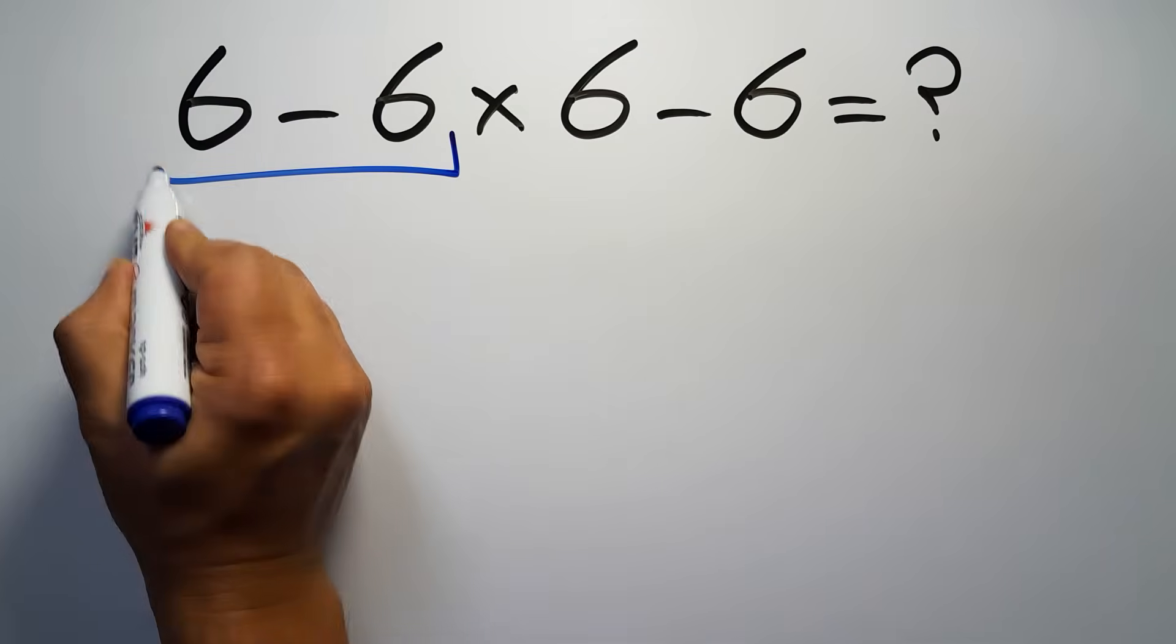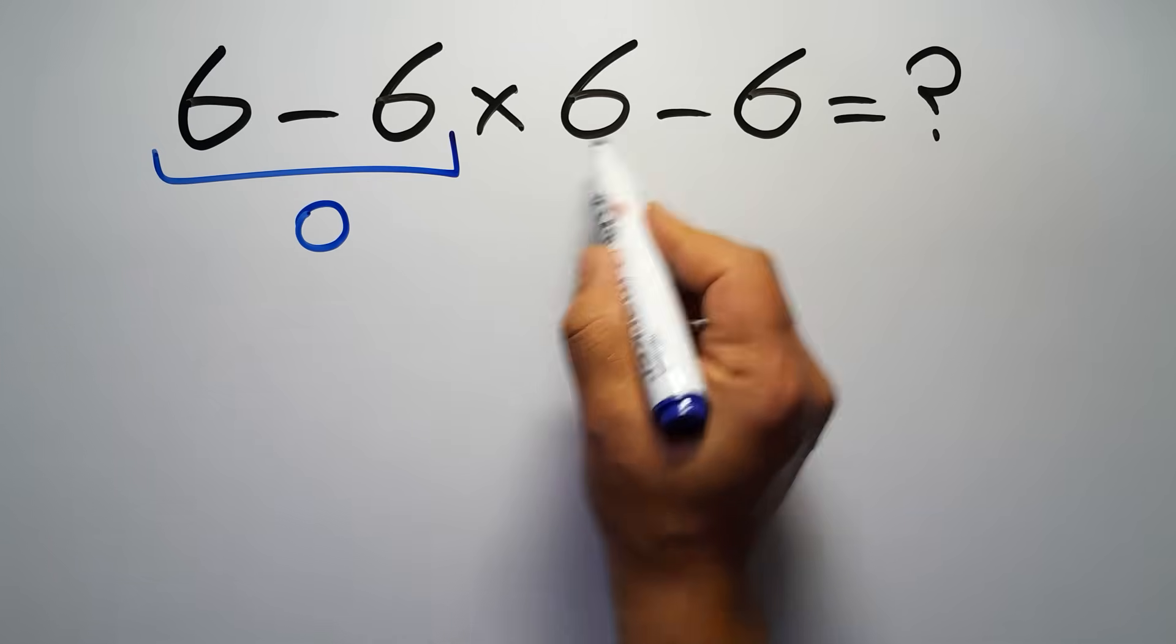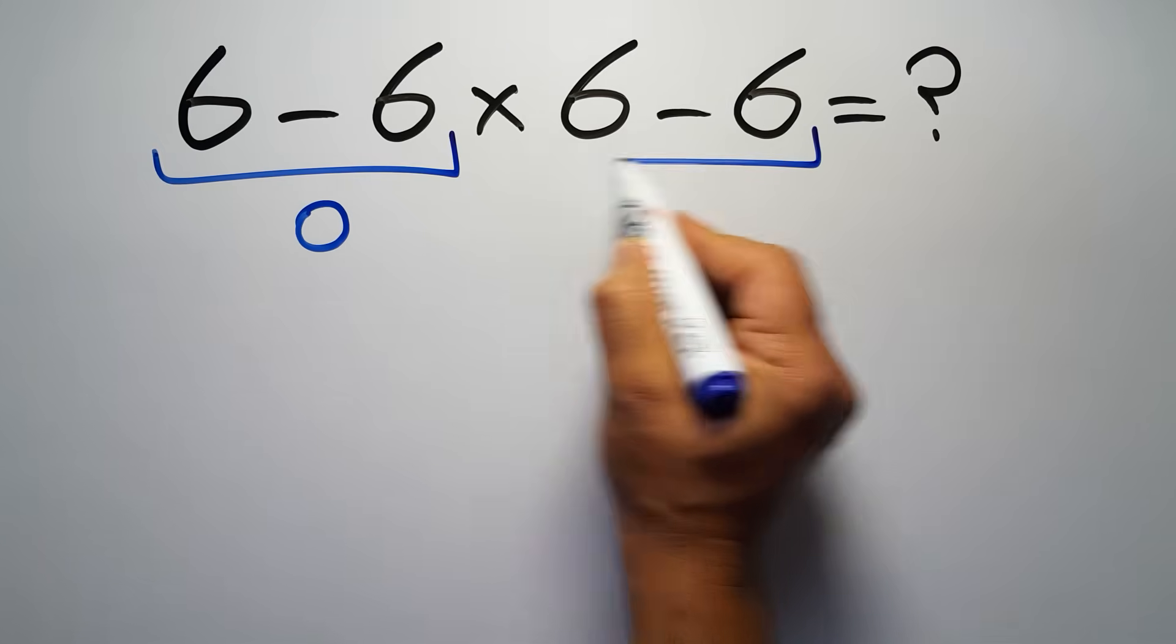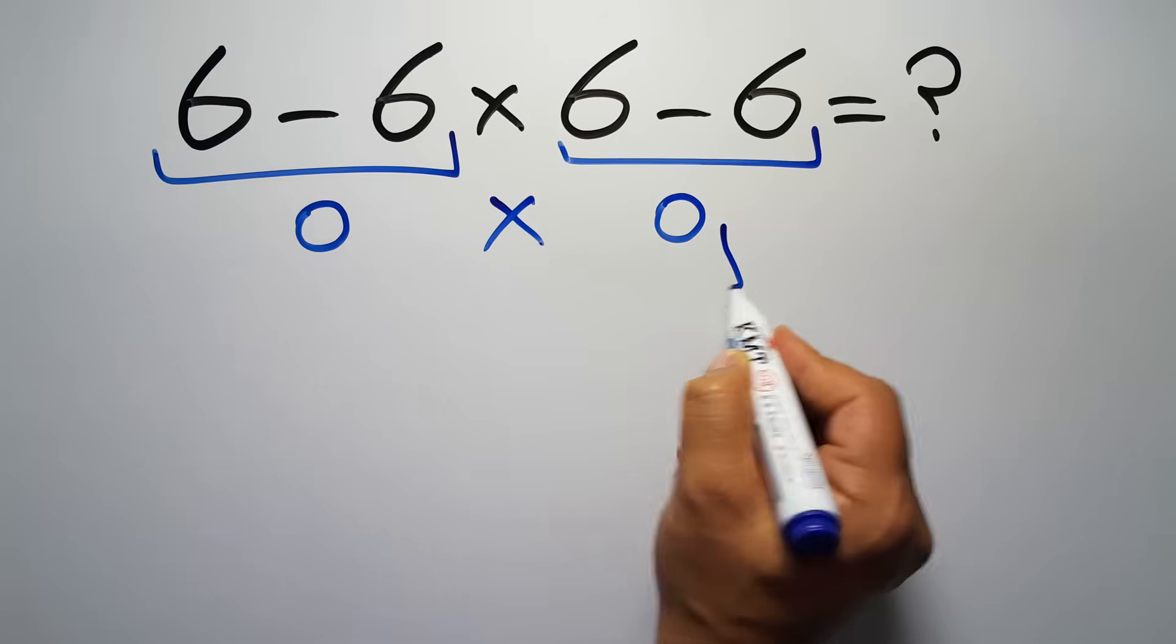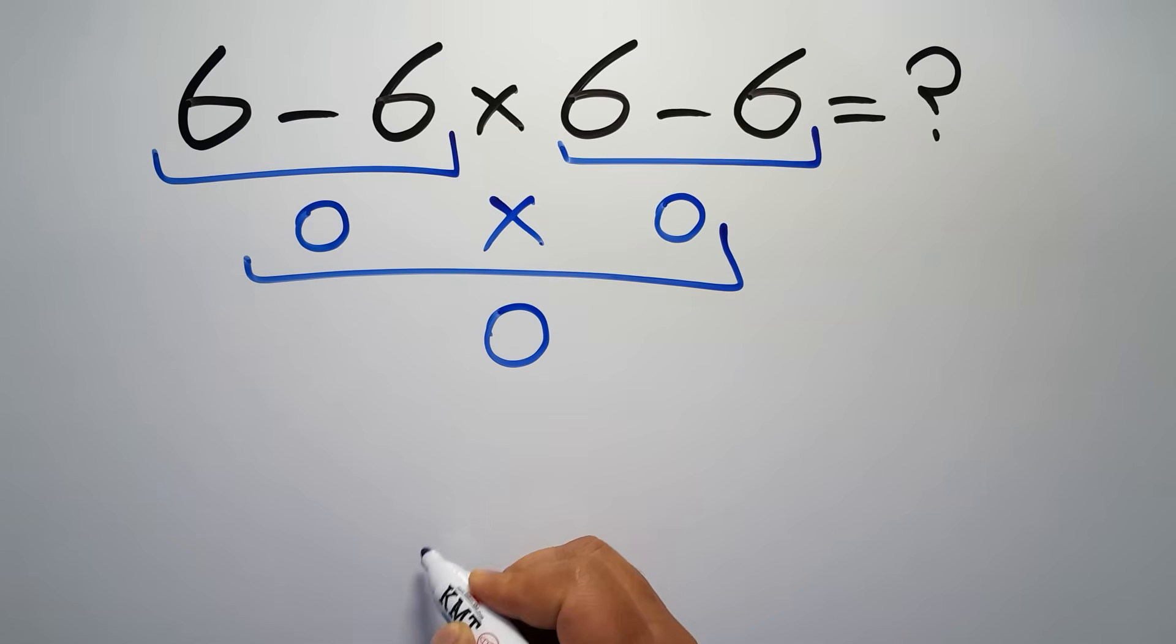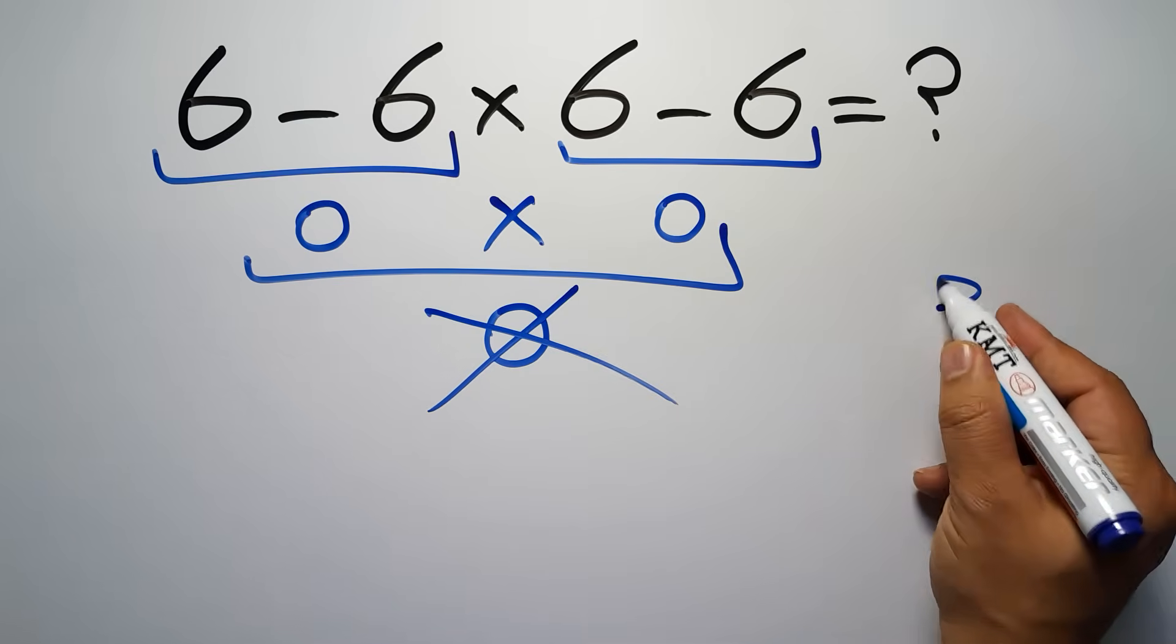Six minus six gives us zero, and again here we have six minus six, so zero times zero is just zero. But this answer is not correct because we need to follow the order of operations.